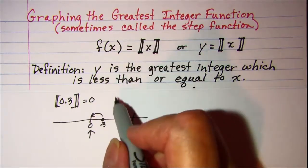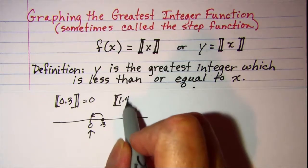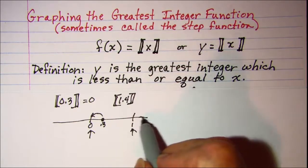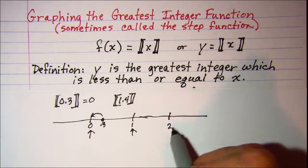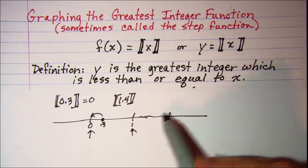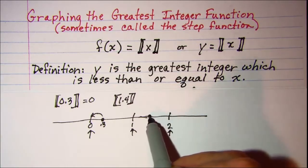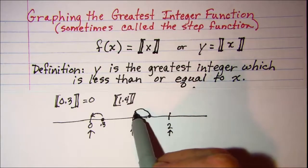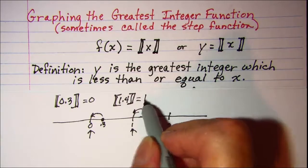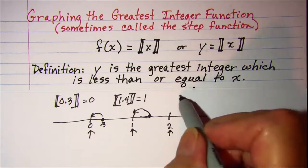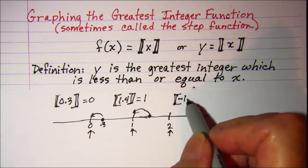Now the greatest integer of 1.4. We continue our number line — here is 2, which is an integer. 1.4 is about here, so we want the greatest integer which is less than or equal to 1.4. So this is equal to 1.